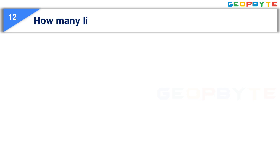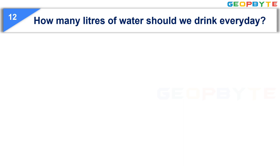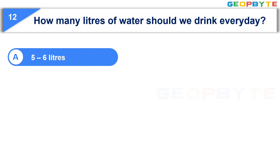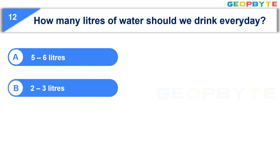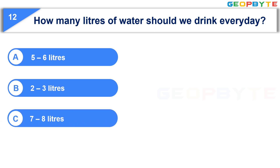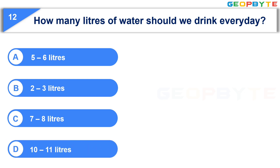Moving to the 12th question: How many liters of water should we drink every day? Option A: 5 to 6 liters. Option B: 2 to 3 liters. Option C: 7 to 8 liters. Option D: 10 to 11 liters. Your time starts now.